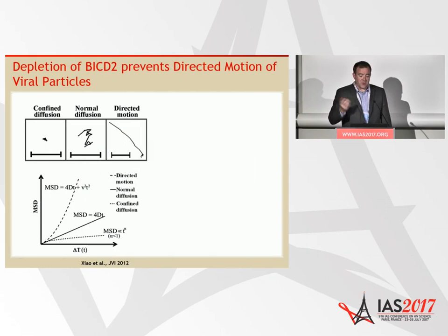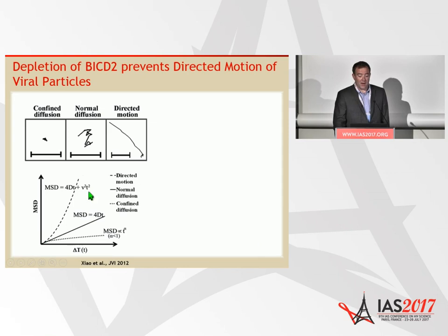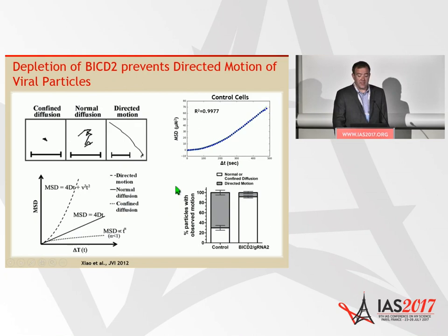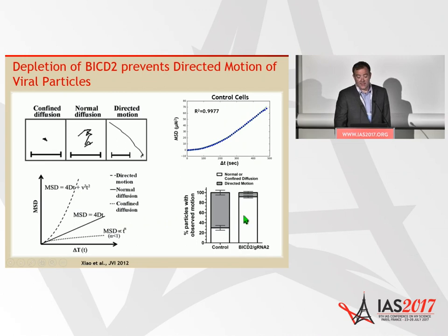To demonstrate microtubule-mediated trafficking, we performed mean-square displacement (MSD) analysis. MSD separates directed motion — which forms a parabolic pattern on the graph — from normal or confined diffusion. Analyzing hundreds of particles, we asked whether BICD2 depletion decreases the ability of viral particles to undergo directed motion. In wild-type cells, the majority of viral particles show a pattern consistent with directed motion. When BICD2 is knocked out, this pattern of directed motion is substantially decreased.